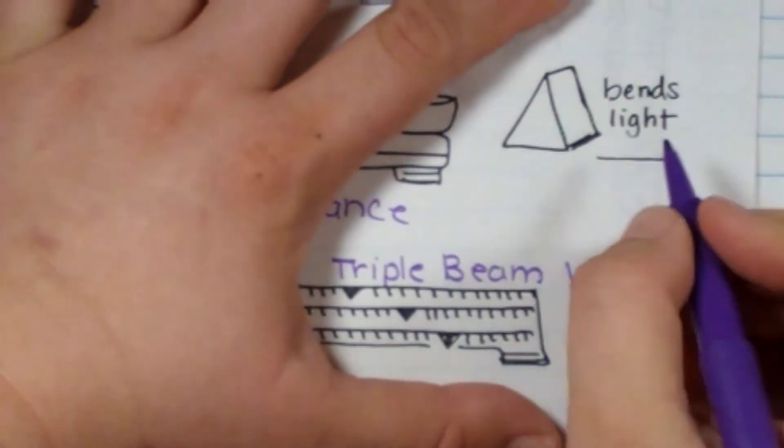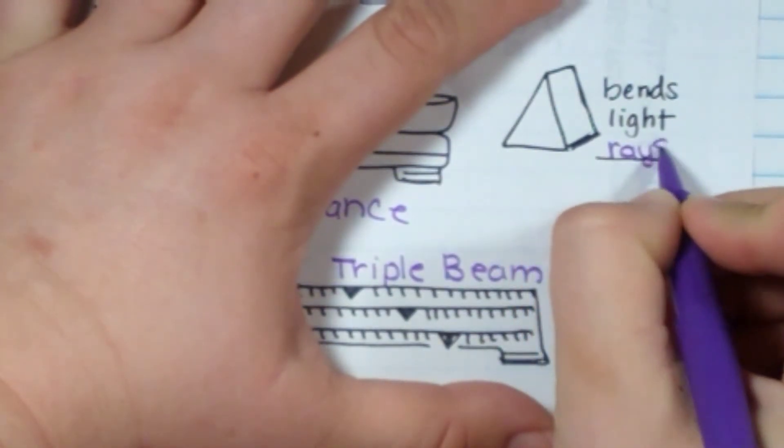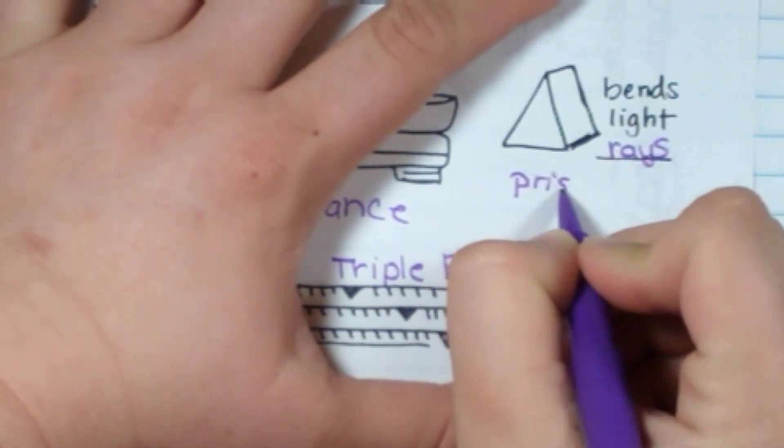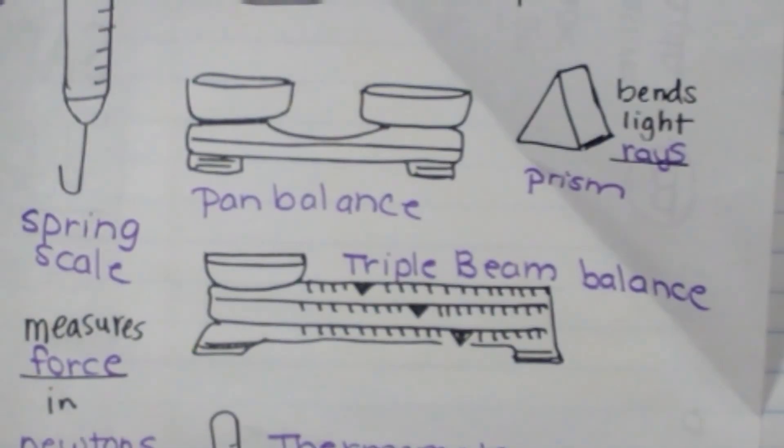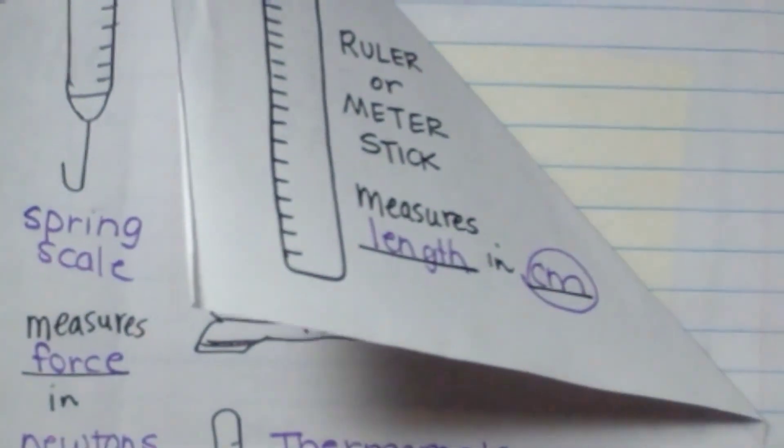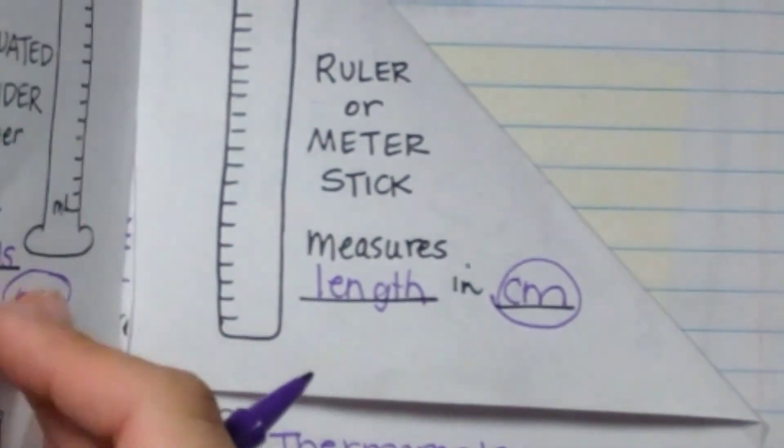And I did not put this one, this one bends light rays. It's called a prism. So those are our tools and you will learn more about them in your reading and digital lesson.